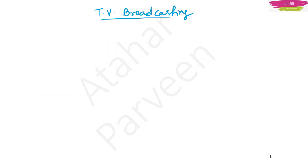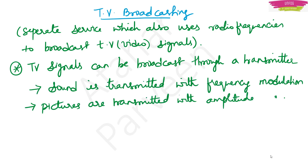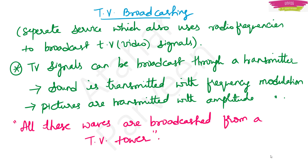Now let us know how TV broadcasting is done. In TV, not only video but audio signals are also transmitted. It is a separate service but uses radio frequencies. TV signals can be broadcasted through a transmitter, just like radio. Because we are transmitting two things — sound and picture — sound is transmitted with frequency modulation, and pictures or video are transmitted with amplitude modulation. This can be asked as an MCQ. All these waves are broadcasted from a TV tower, which is very important.